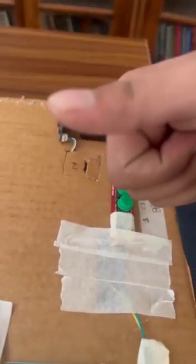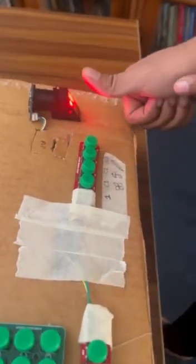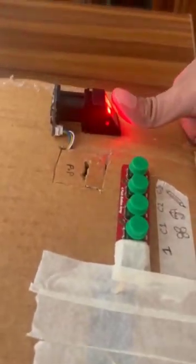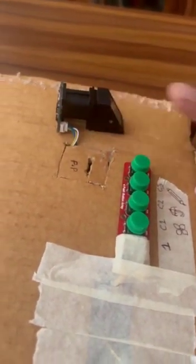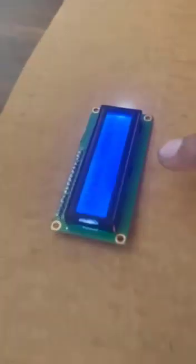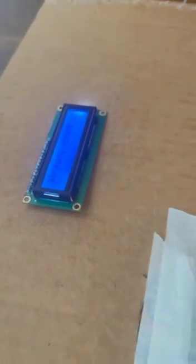This is a finger which was already used, so the LCD says already voted. Next we test an unregistered voter.